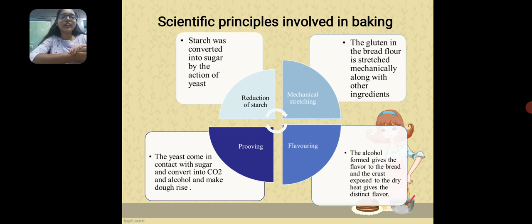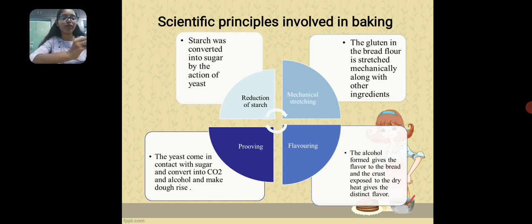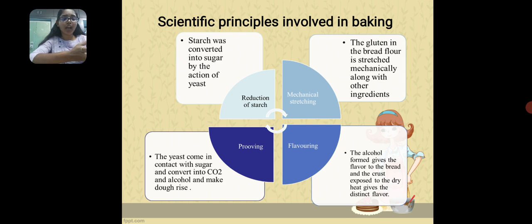We can see about some scientific principles involved in baking. The first is reduction of starch, in which the starch is converted into sugar by the action of yeast. The second principle is mechanical stretching, in which the flour contains a protein called gluten which is stretched mechanically along with the other ingredients.